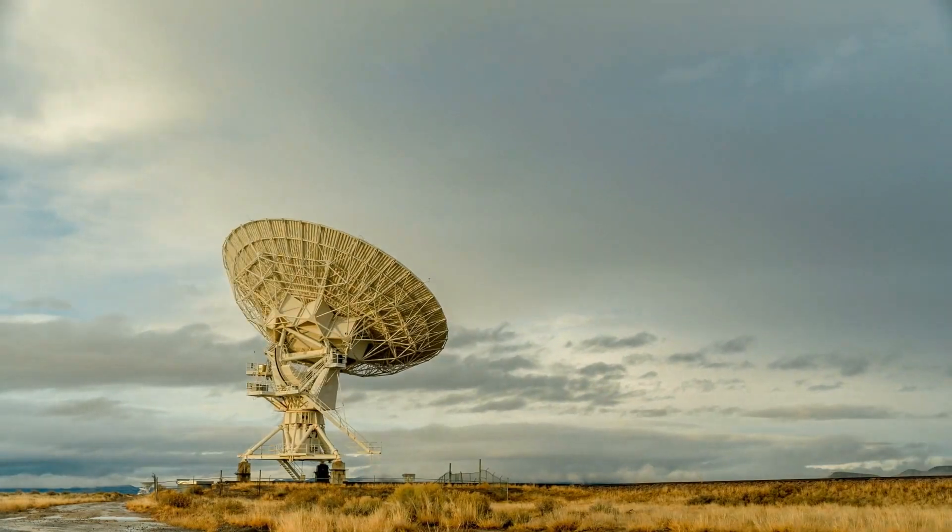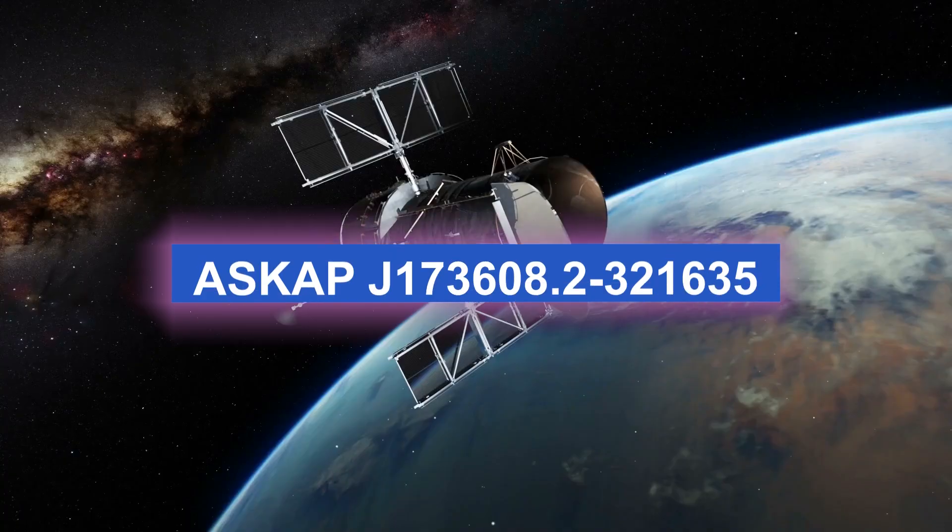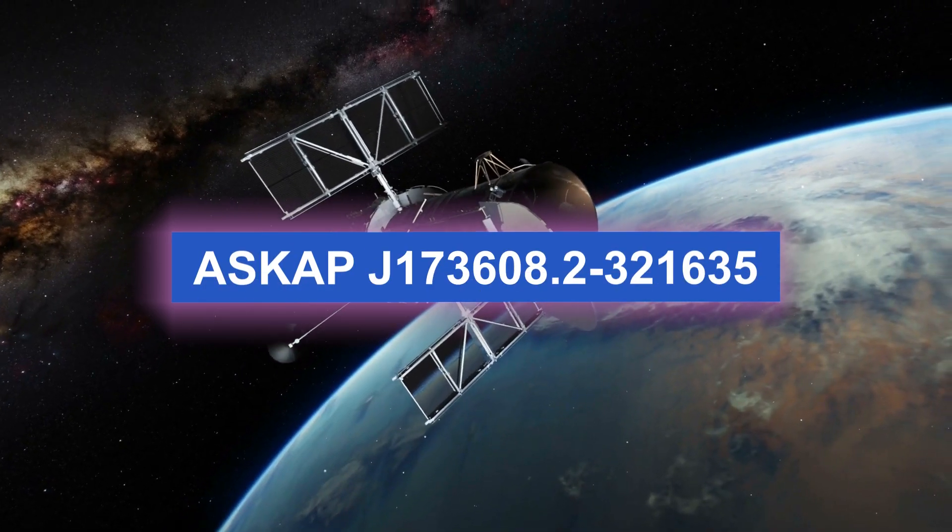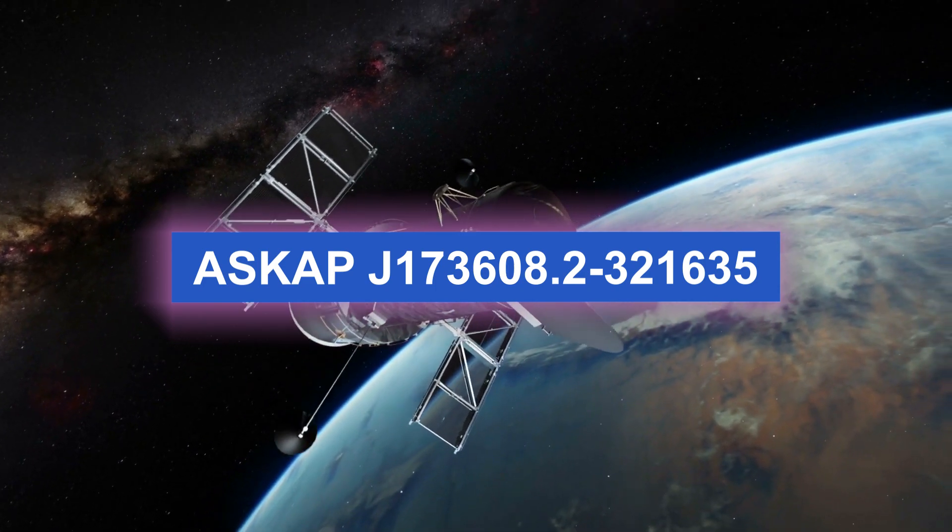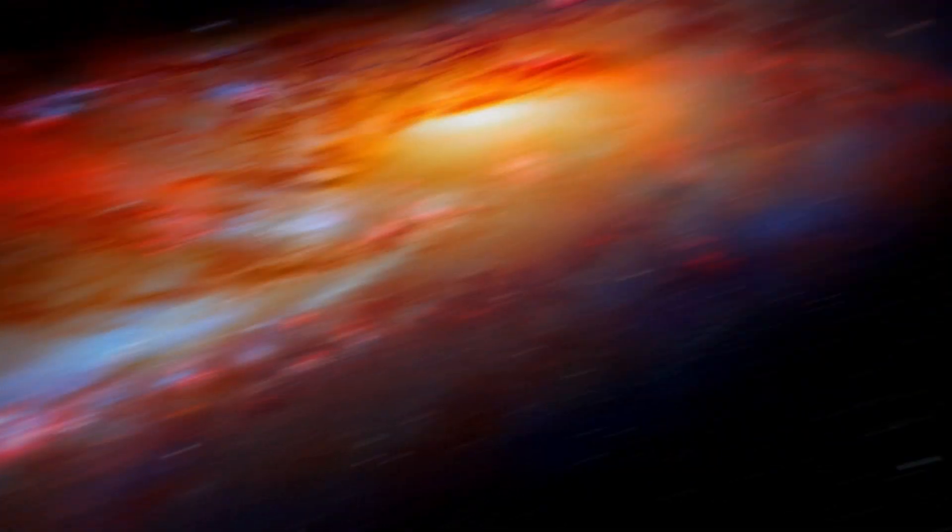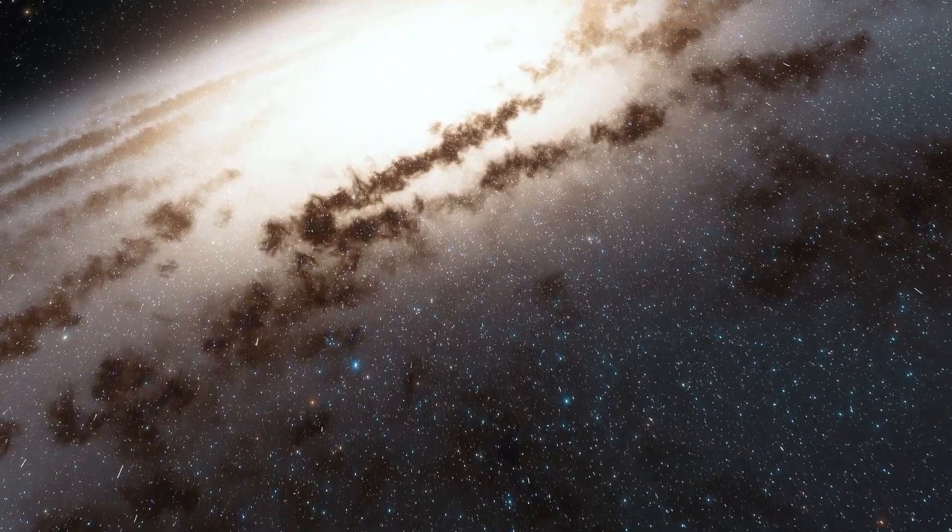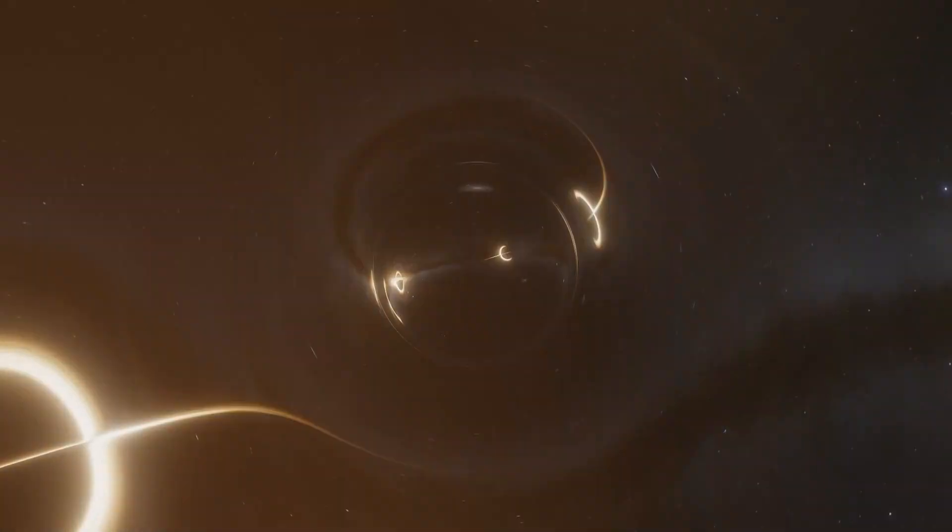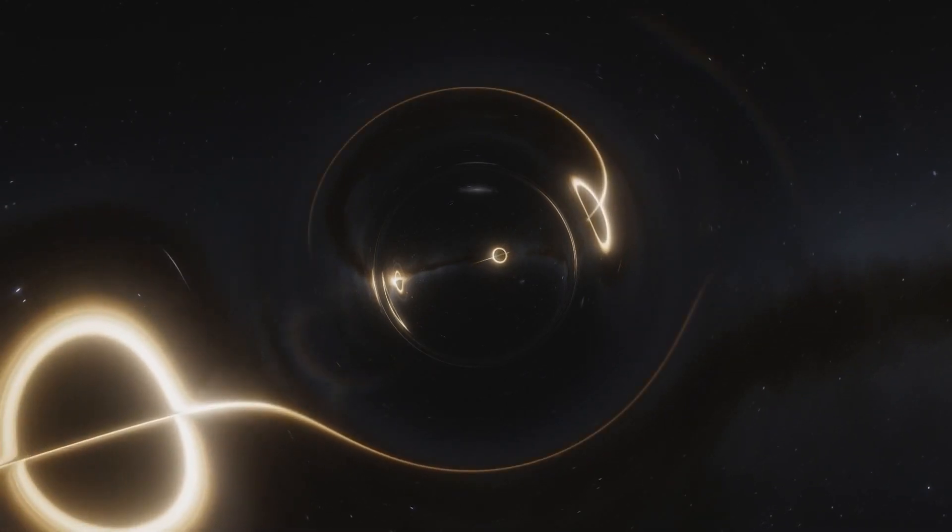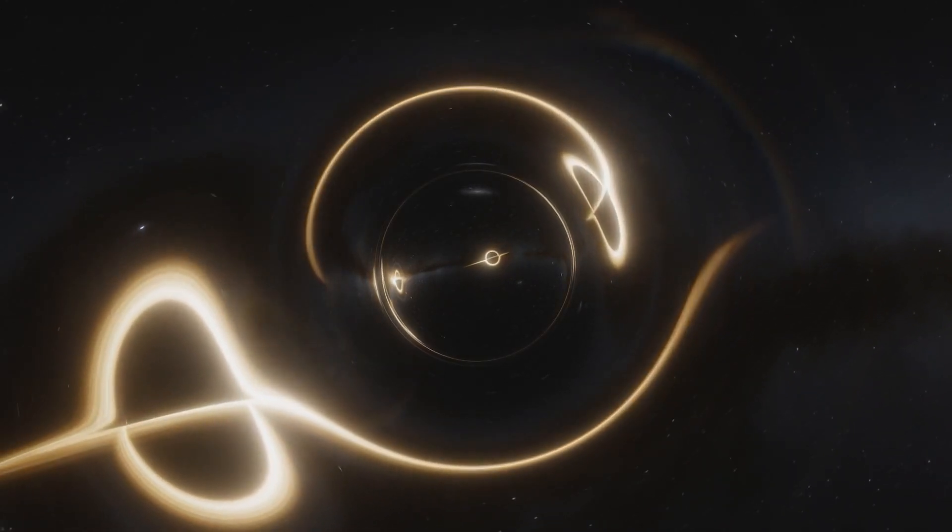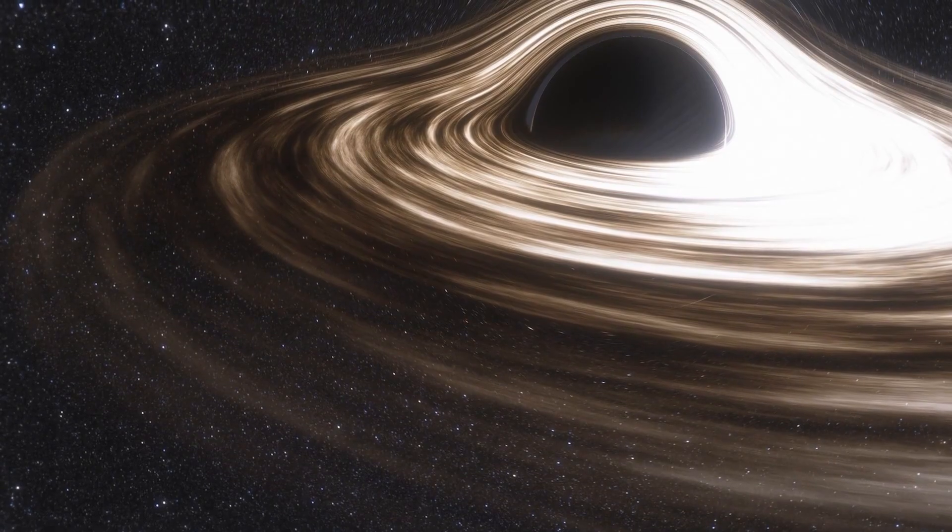The object referred to by its coordinates as ASKAP J173608.2-321635 was discovered by us when we looked at the center of the Milky Way. It was a phenomenon that had never been seen before, because it first looked to be invisible, then brightened, then vanished, then finally reappeared.